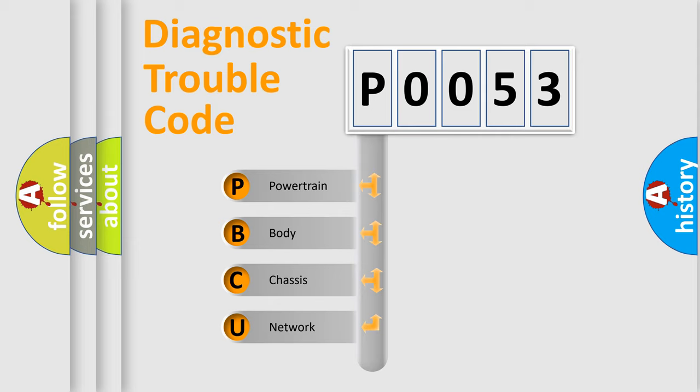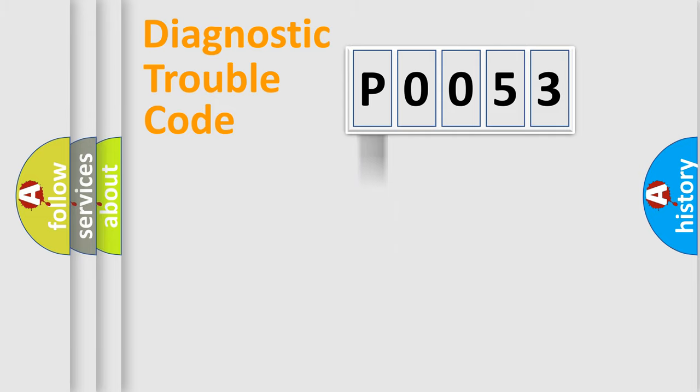We divide the electric system of automobile into the four basic units: Powertrain, Body, Chassis, Network. This distribution is defined in the first character code.